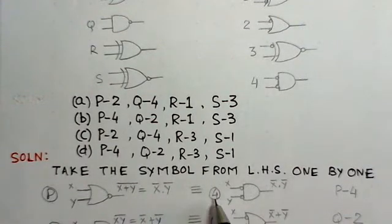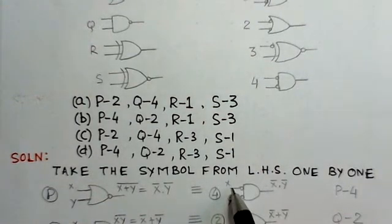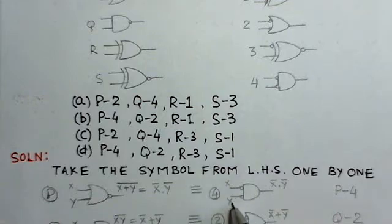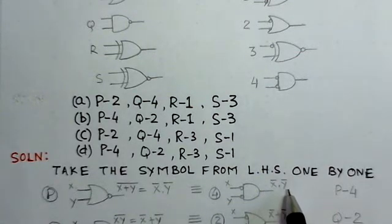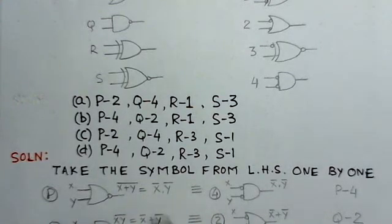We observe here that gate number 4 is the gate whose De Morgan's equivalent is, or as per De Morgan's theorem, if the inputs are X and Y, it gives X bar, Y bar. So the output is the same in both cases, so this P corresponds to gate number 4.